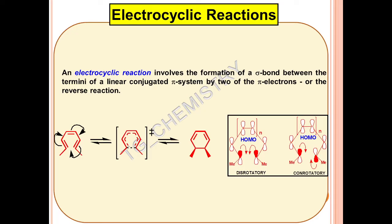In organic chemistry, an electrocyclic reaction is a type of pericyclic rearrangement which involves the formation of a sigma bond between the termini of a linear conjugated pi system by two of the pi electrons, or the vice versa. In the diagrammatic presentation, if we go in this direction, that should be the electrocyclic ring closure — a open chain linear conformer with a 6π electron system upon cyclization transformed into a cyclic conformer. When the other way happens, that is from the cyclic to the linear conformer, it will be known as electrocyclic ring opening reaction.